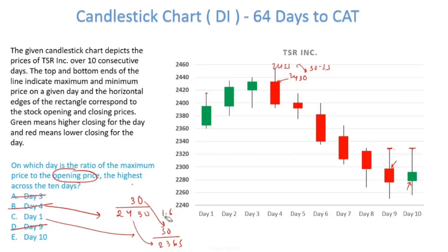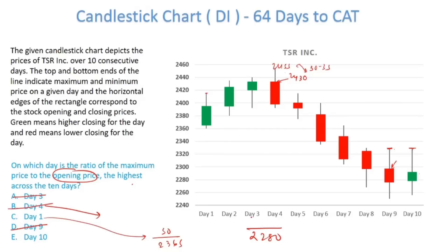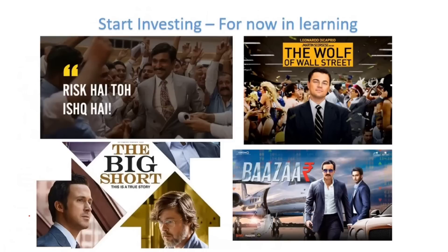Comparing day 1 and day 10: on day 10, the opening price is around 2280 and the high is around 2330 — a difference again of approximately 50. The numerators are approximately the same, but the denominator for day 10 is lower. Hence, day 10 gives the maximum ratio of maximum price to opening price. That's the answer. Start investing in learning — thanks, God bless.